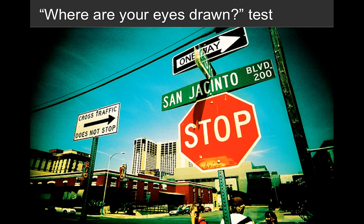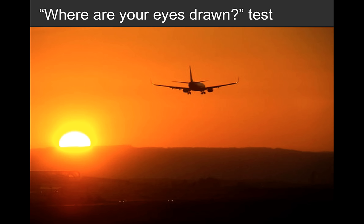Most people go immediately to that big bold red stop sign at the bottom right — because of the bright color, because we're trained that red means danger and pay attention, and because of the big bold capital letters. Then we back up and read the other signs. In the next image, most people are drawn to the sun at the bottom left, but if you try to focus on the sun, the plane in the peripheral vision pulls you there too. This illustrates the tension that can happen if you're emphasizing multiple different things on a page or within a data visualization.